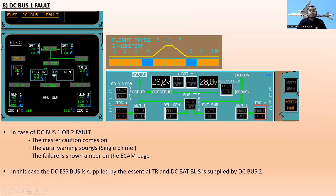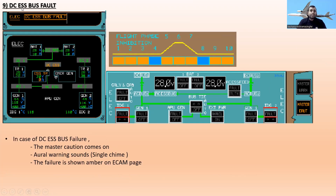The next one is DC bus one fault. In case of DC bus one or two fault, master caution comes on with a single chime oral warning, and the failure is shown amber on the ECAM page — ELEC DC bus one fault. In this case, the DC essential bus is supplied from the essential TR, and the DC bat bus is supplied by DC bus 2. Remember: if DC bus one is faulty, the DC essential bus is supplied from the essential TR.